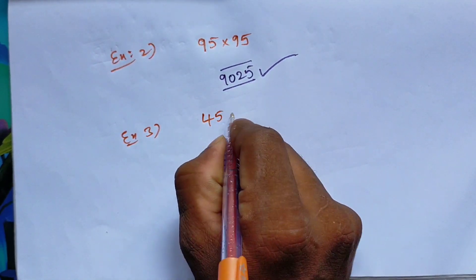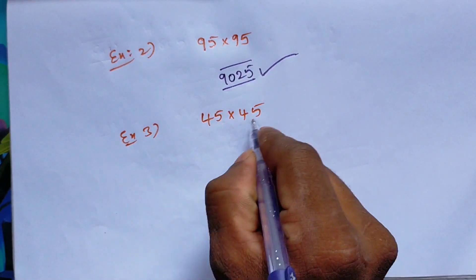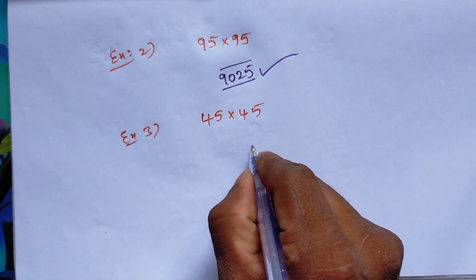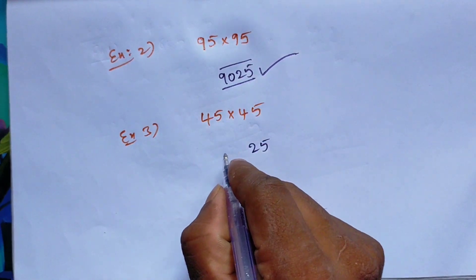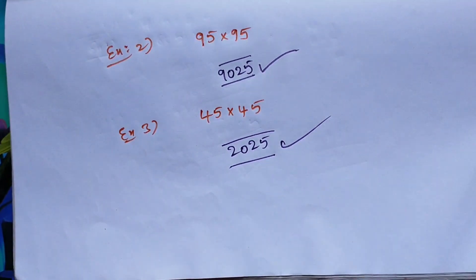Now for 45 times 45. The same numbers, and the last digit is 5. So 5 times 5 is 25. Then 4 times the next number 5 is 20. So the answer is 2025.